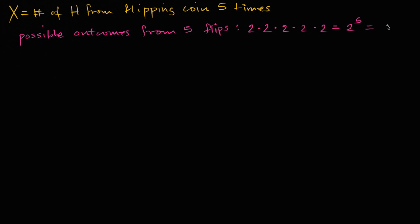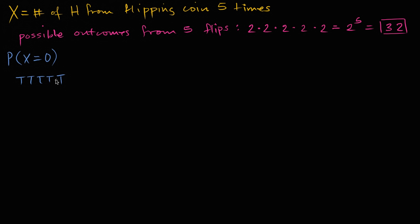This is helpful because for each value the random variable can take on, we just need to figure out how many of these 32 equally likely possibilities result in that value. The probability that X equals zero means you got no heads out of five flips. There's only one way — the one where you get five tails — so P(X=0) equals one out of 32.